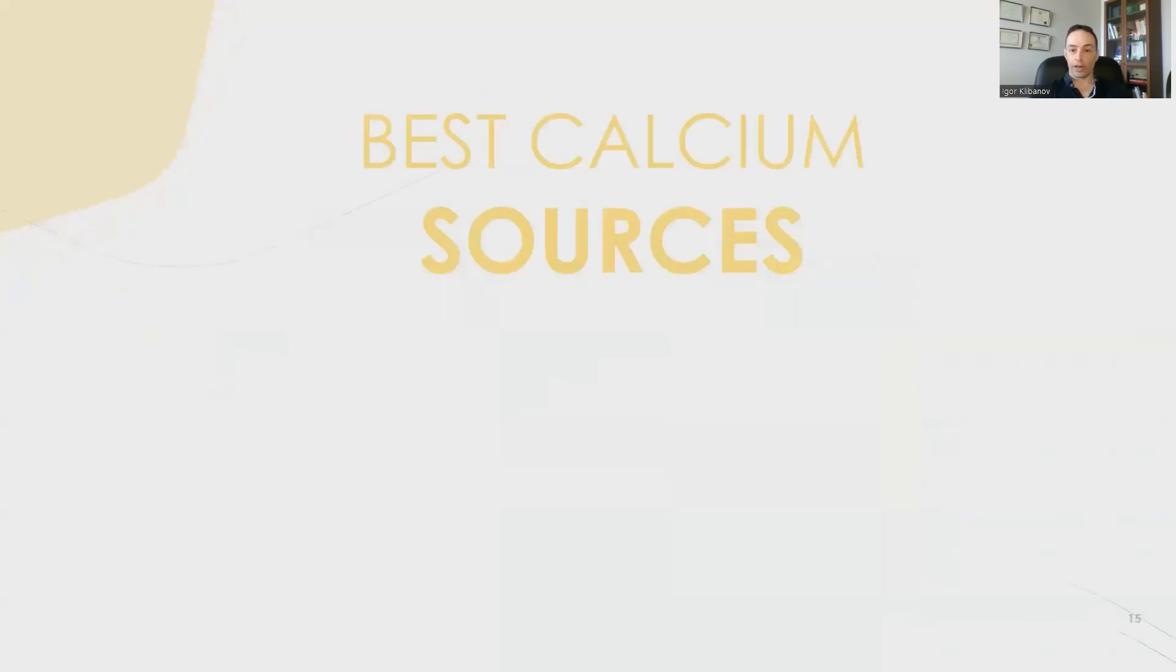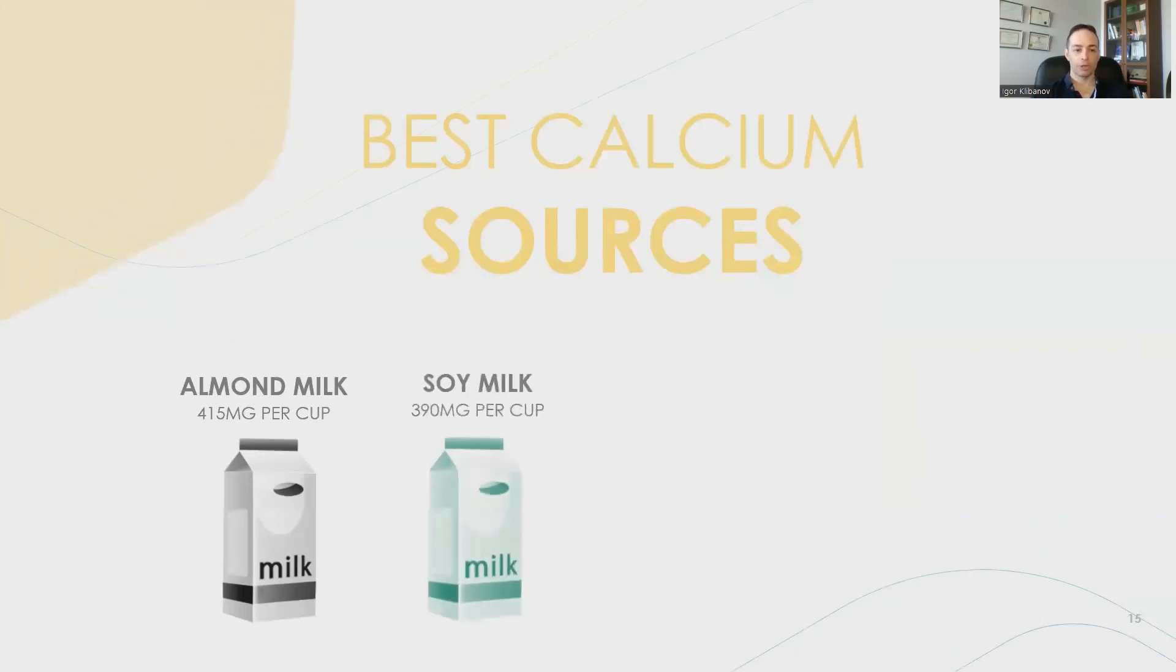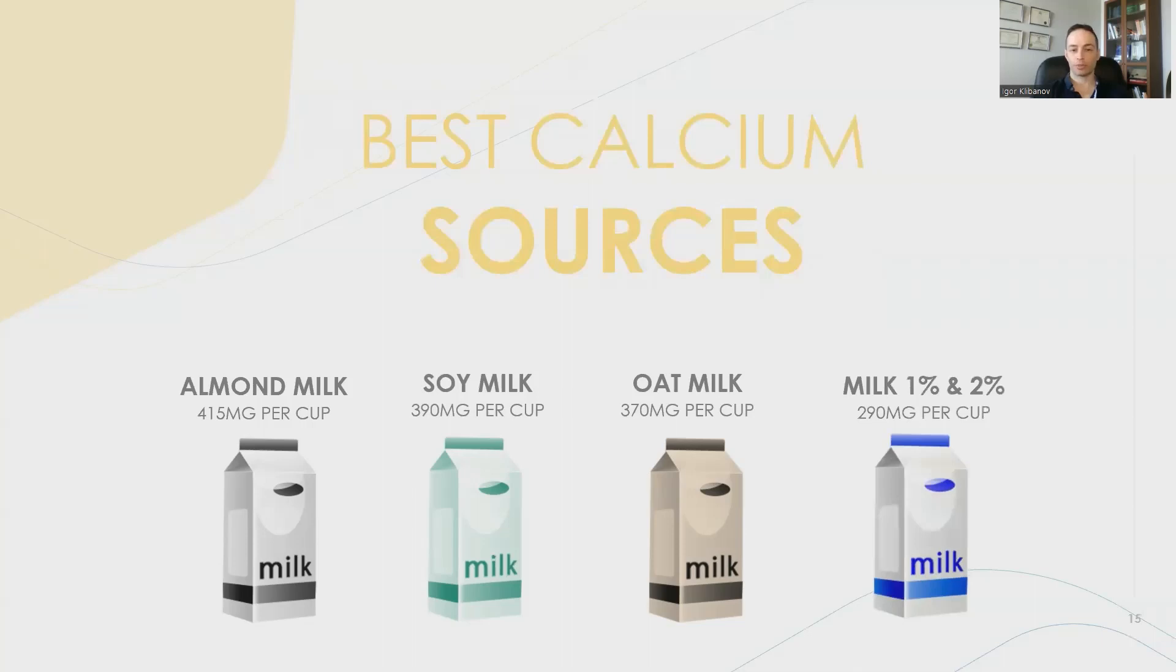Now, there's also other great calcium sources. Here are the best ones. Almond milk contains 450 milligrams per cup. Soy milk contains 390 milligrams per cup. Oat milk contains 370 milligrams per cup. And regular cow's milk, 1%, 2% milk contains 290 milligrams per cup.